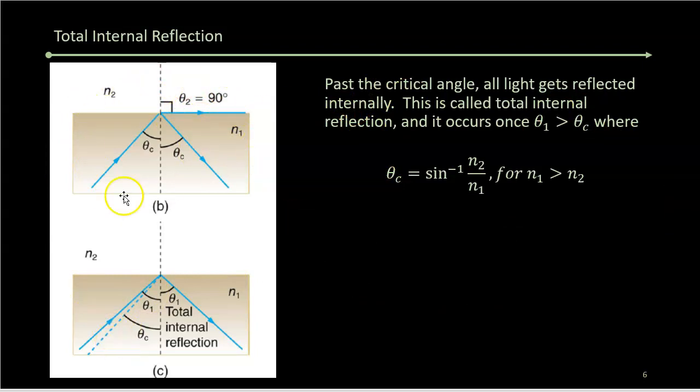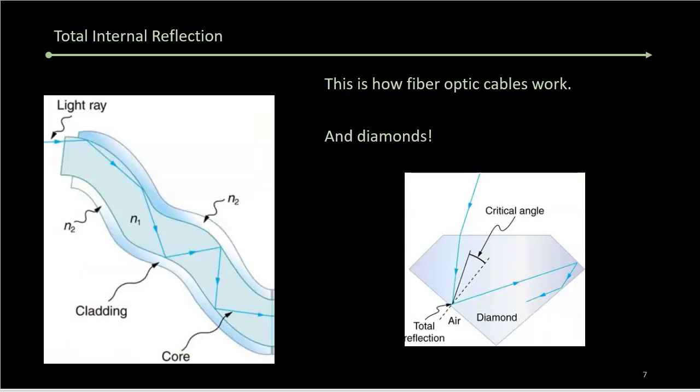Because past that point, everything is reflected inside the material—you get what we call total internal reflection. It's a very important phenomenon that we use all the time. The two main places we use it are fiber optic cables.